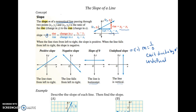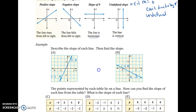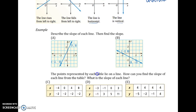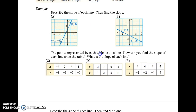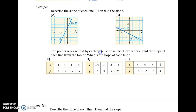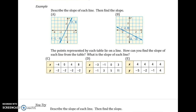We want to be able to find the slope of a line given a line and also given two points. Looking at the first example, we want to describe the slope and then find the actual value. For A, we can clearly see it's going up from left to right, so this is a positive slope. And for B, we see it going down from left to right, so this would be a negative slope.